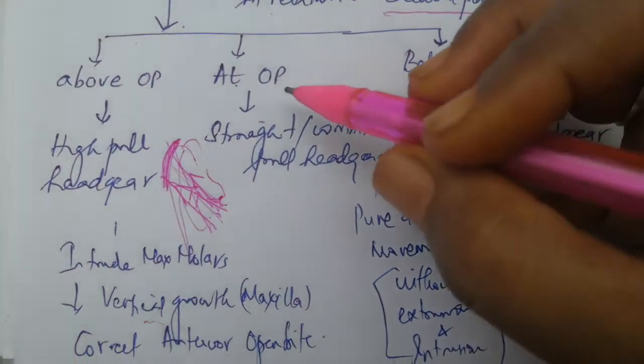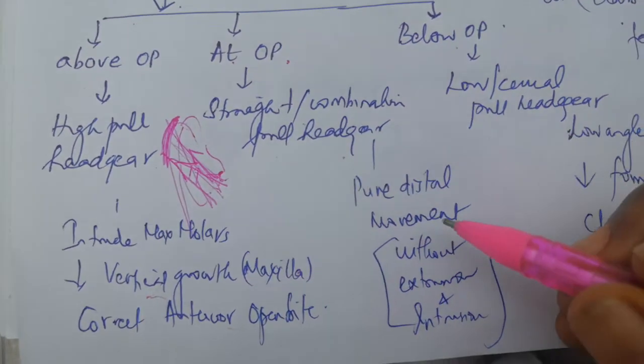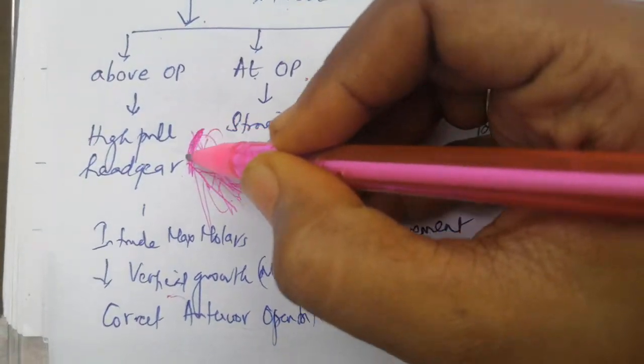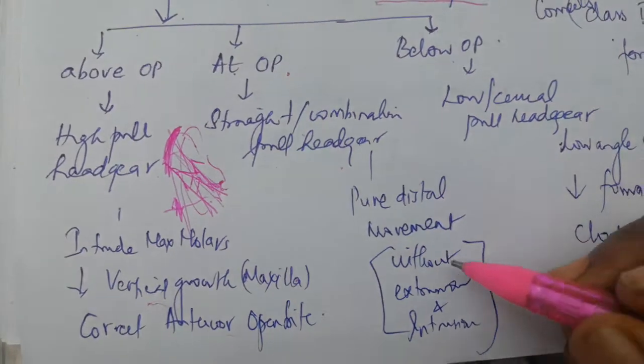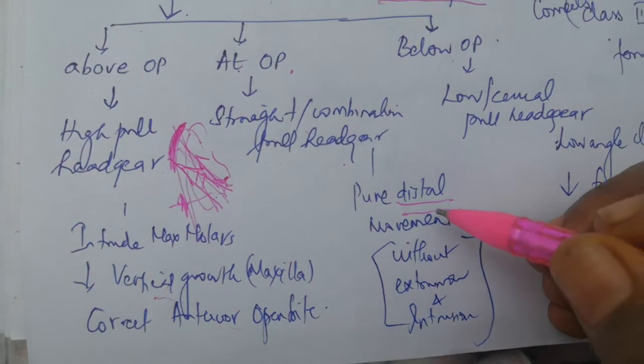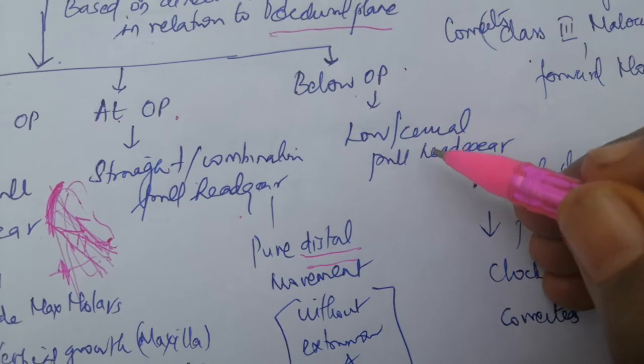If it is a straight or combination pull headgear, then both the head and neck strap will be there, so it will be a hybrid one. Only distal movement will be achieved; there will be no extrusion or intrusion of the molars.